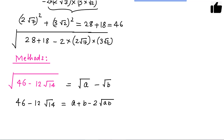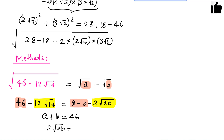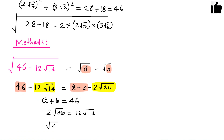Now we equate the rational and irrational parts. The rational part gives us a plus b equals 46, and equating the irrational parts, 2 times square root of (ab) equals 12 times square root of 14, which simplifies to square root of ab equals 6 root 14. So we have two equations: a plus b equals 46, and square root of ab equals 6 root 14.